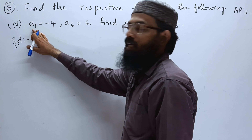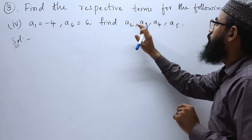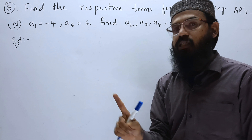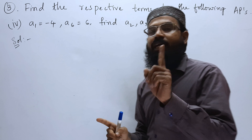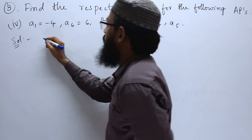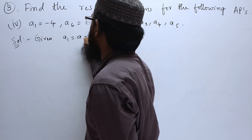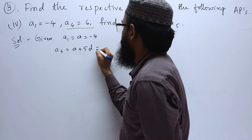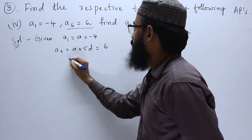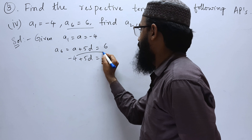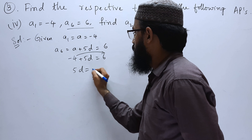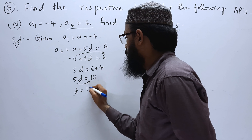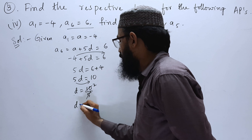Fourth bit: the first term is minus 4 and sixth term is 6. Find the second, third, fourth, and fifth terms. To find anything in AP we need A and D. Given: A equals minus 4, and A6 equals A plus 5D equals 6. So minus 4 plus 5D equals 6, giving 5D equals 10, therefore D equals 2.